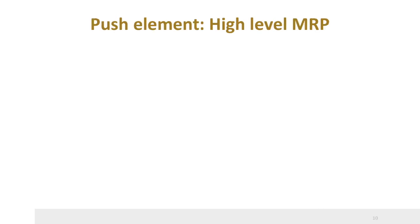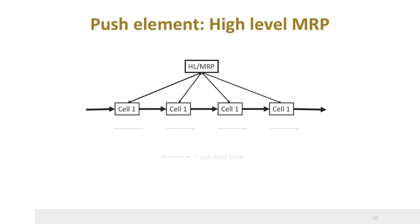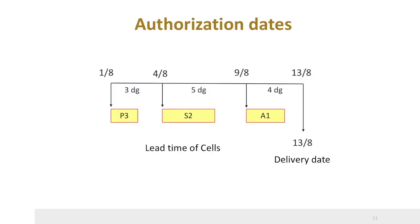POLCA is based on the principle of pull — only when there is capacity for the next operation may an operation start. However, there is also a push element in POLCA, which creates the manufacturing orders. This is called high-level MRP. The MRP system uses customer orders and forecast orders to load the POLCA manufacturing system. The high-level MRP system does not consider the manufacturing times needed for each process, but just uses the lead times needed for each cell. It sets authorization dates for the manufacturing and processing of jobs in each cell.